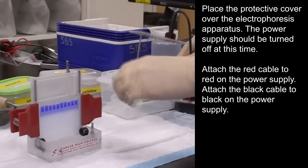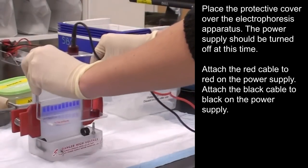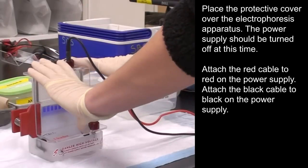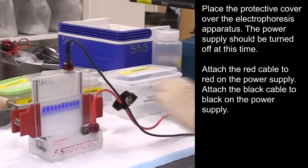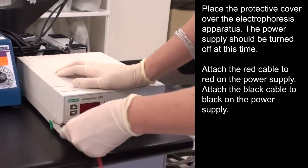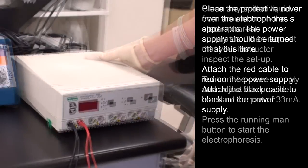Place the protective cover over the electrophoresis apparatus. The power supply should be off at this time. Attach the red cable to red on the power supply and attach the black cable to black on the power supply.